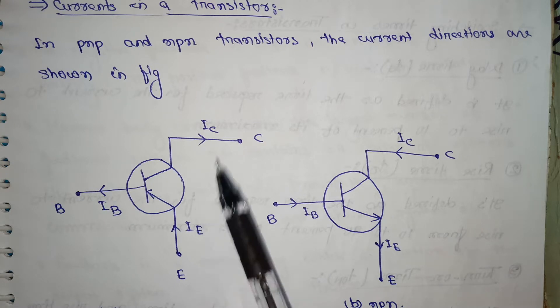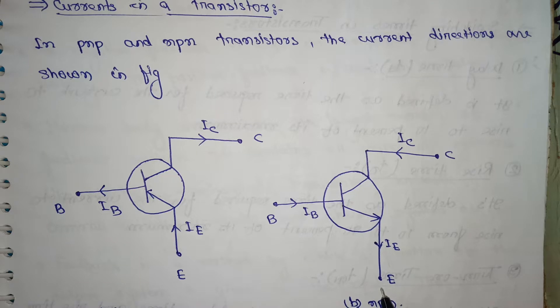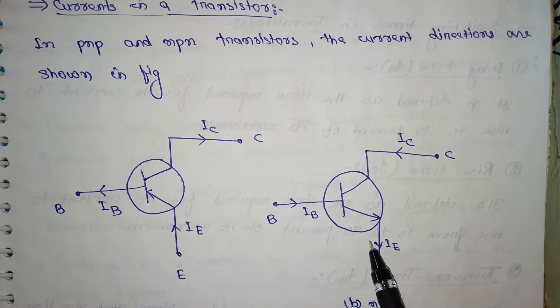Next, currents in the transistor. We have the NPN transistor and the PNP transistor shown here.